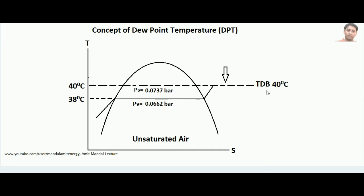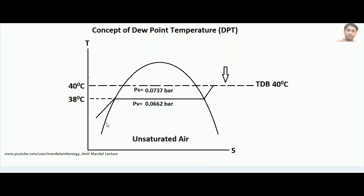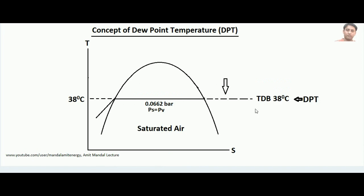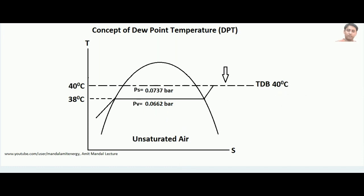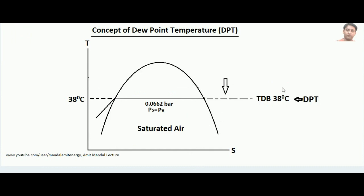If the vapor pressure is lower than the saturation pressure of the corresponding dry bulb temperature, the air is unsaturated. Now suppose I reduce the temperature from 40 degrees to 38 degrees centigrade. At 38 degrees centigrade, the vapor pressure matches the saturation pressure — air is now saturated. I have lowered the temperature to the level where the vapor pressure in air equalizes the saturation pressure of that lower temperature. This temperature is the dew point temperature.